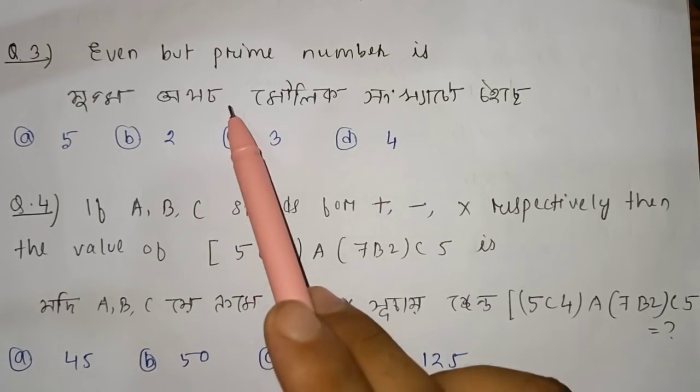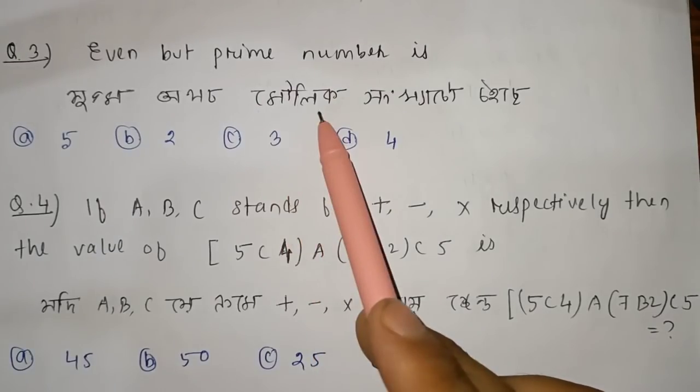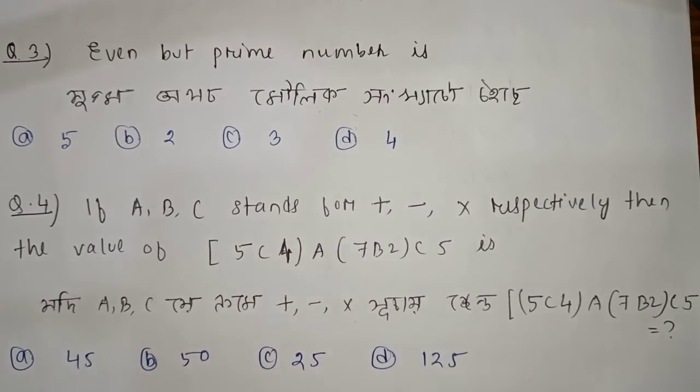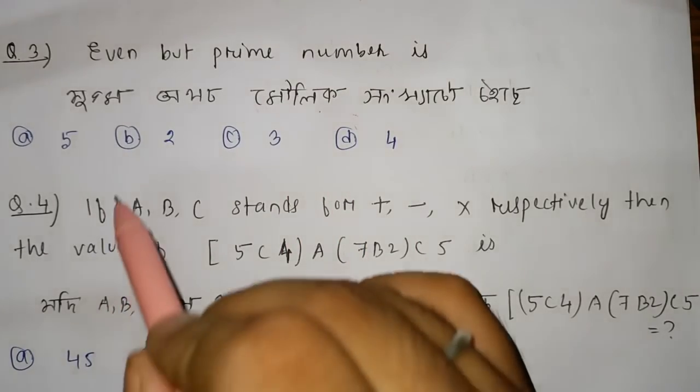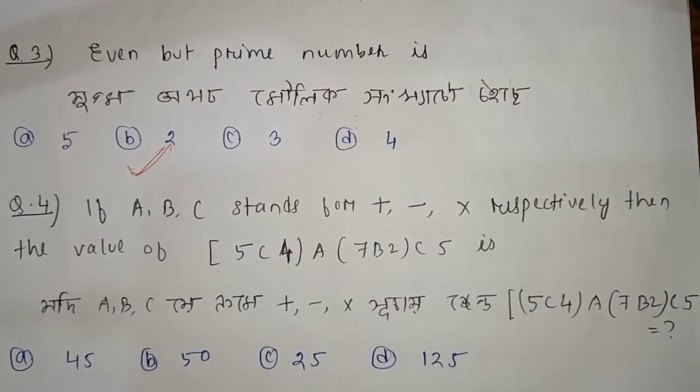The next question is about prime numbers — which of the following numbers is prime? Option B is the correct answer.